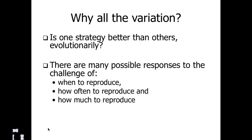So why all this variation? Which strategy is better? As with any adaptation, there is no best — there is no ideal. It all depends on the situation and different circumstances. For different organisms, depending on how long they live, where they live, and what predators are available, they will be individually selected for when to reproduce, how often, and how large their litter will be.